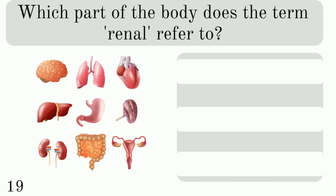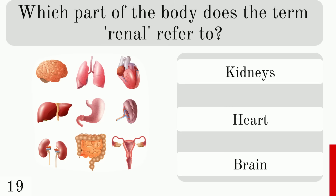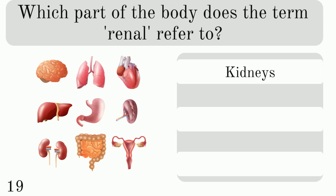Which part of the body does the term renal refer to: kidneys, heart, or brain? The answer is the kidneys.